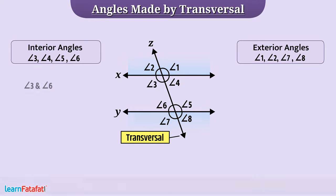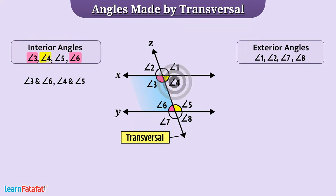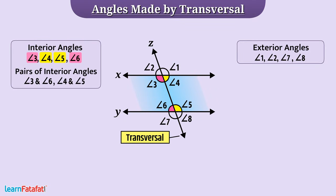Angle 3 and angle 6 are interior angles but are on the same side of the transversal. Similarly, angle 4 and angle 5 are also interior angles on the same side of the transversal. So, we say that these are a pair of interior angles on the same side of the transversal.